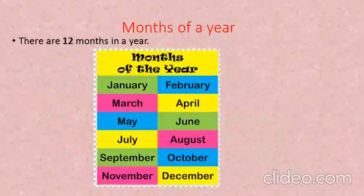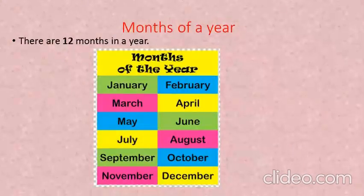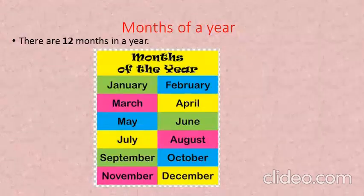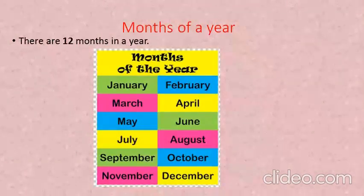Months of a year. There are 12 months in a year: January, February, March, April, May, June, July, August, September, October, November and December.